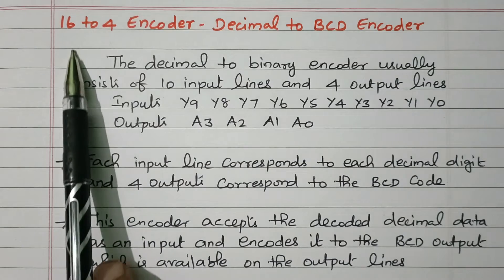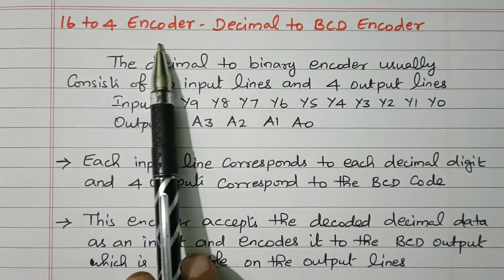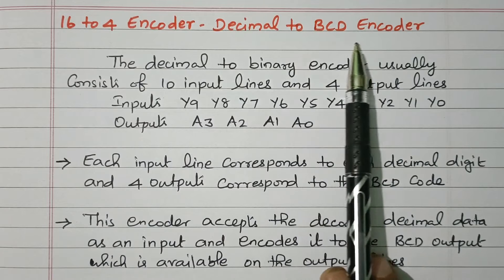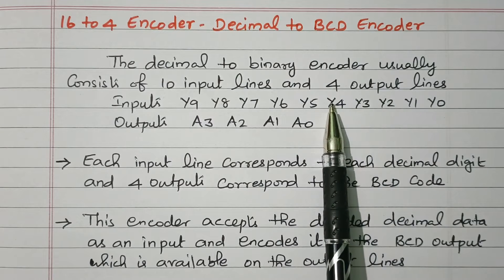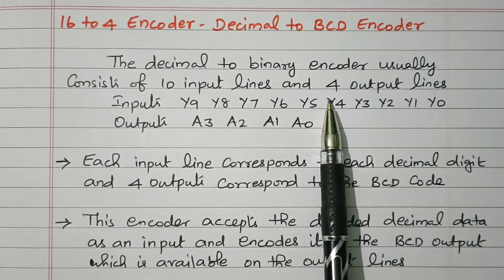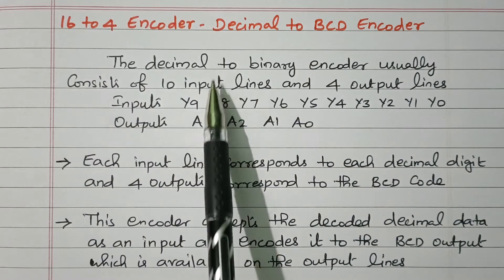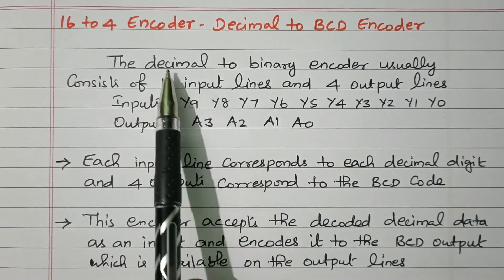Welcome viewers. In this video we'll see the 16 to 4 encoder, also called as decimal to BCD encoder. Subscribe the channel for more videos and notifications. Soft copy of this material is available in the drive — the link is given in the description box. Now we'll go to the topic: 16 to 4 encoder, decimal to BCD encoder.